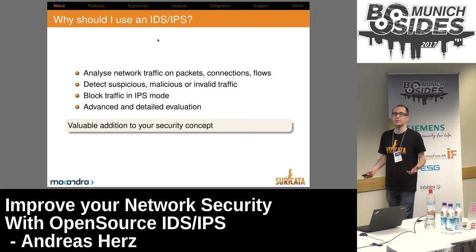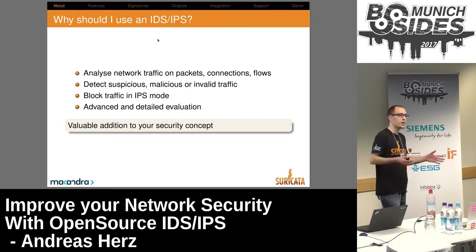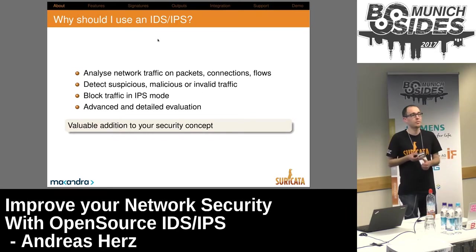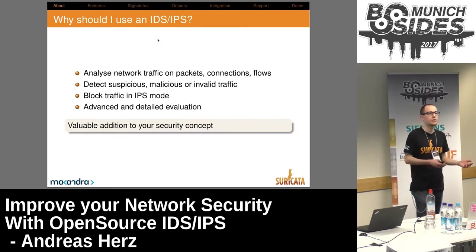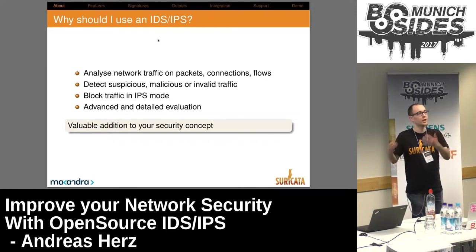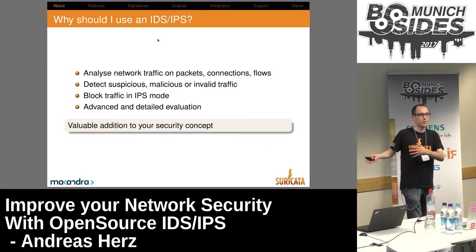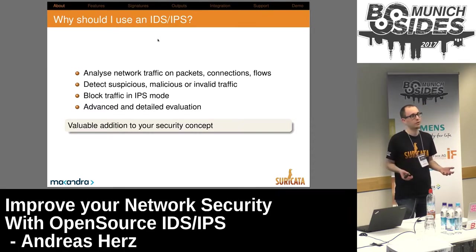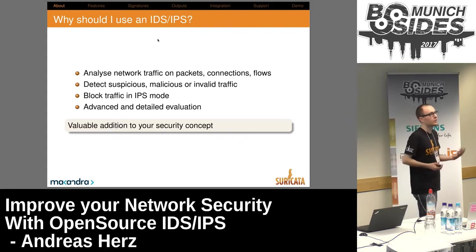You can analyze the whole traffic of your network — the connections and the flow. Whatever you want to look into, you can do it with Suricata and choose the parameters you want. You can detect suspicious and malicious traffic; one main purpose is using signatures like those from Emerging Threats to detect malware, but you can also look for invalid or unexpected traffic. It gives you a really advanced, detailed evaluation of your network — not just for incident response, but also to learn more about what's happening in your network. In my opinion it's a valuable addition to your security concept, alongside your firewall and other systems.